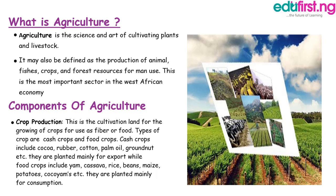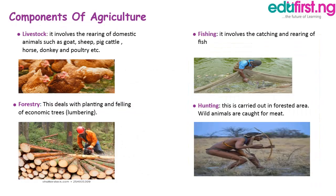Components of agriculture include crop production. Crop production is the cultivation of land for the growing of crops for use as fiber or food. The types of crops are either cash crops or food crops. Cash crops like cocoa, rubber, cotton, and palm oil are planted mainly for export purposes, while food crops like yam, cassava, rice, and beans are planted for consumption.